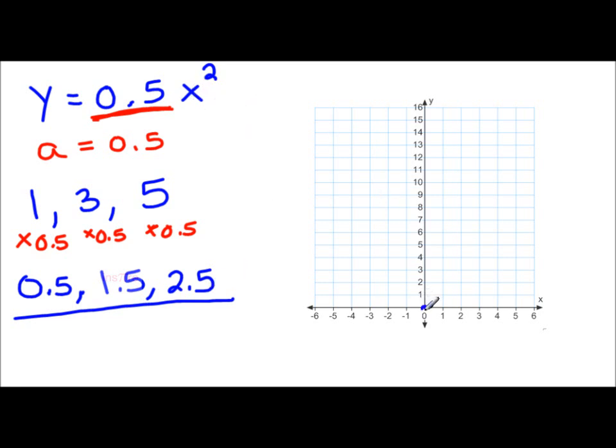Again, we're starting at the origin. There's our vertex. Instead of going over one, up one, we're now going over one, up 0.5. Over one, up 1.5. And over one, up 2.5. Same thing the other direction. Over one, up 0.5. Over one, up 1.5. And over one, up 2.5.